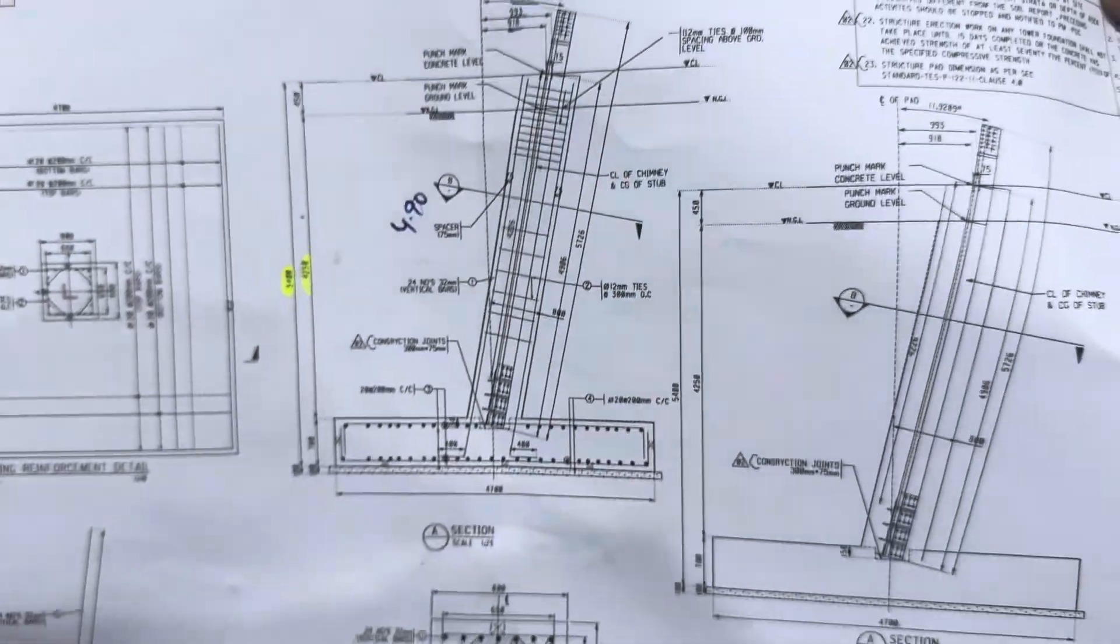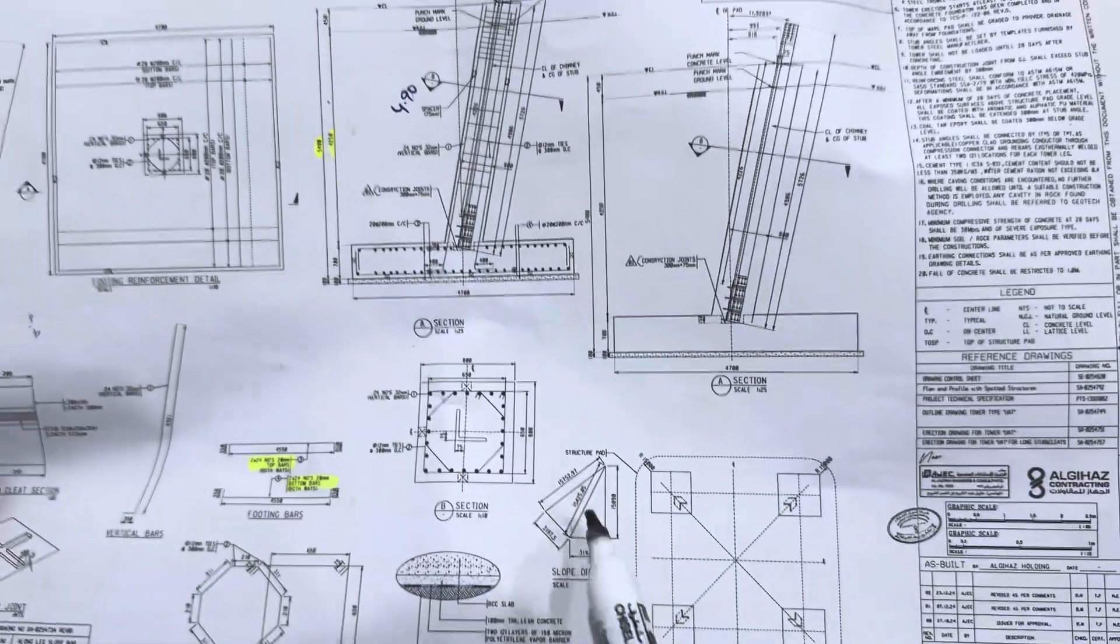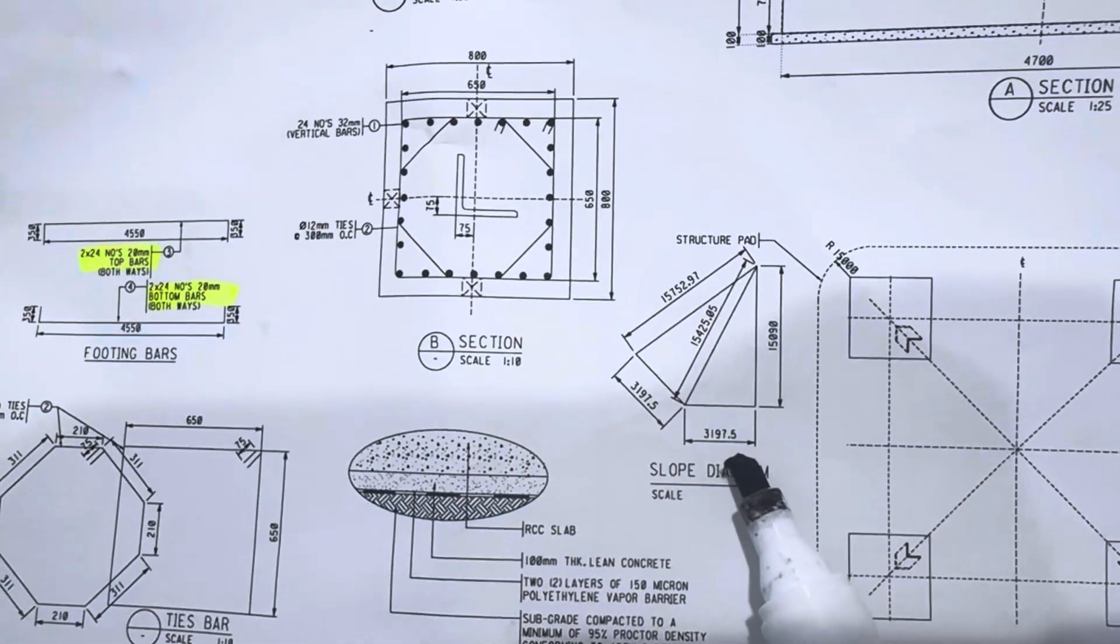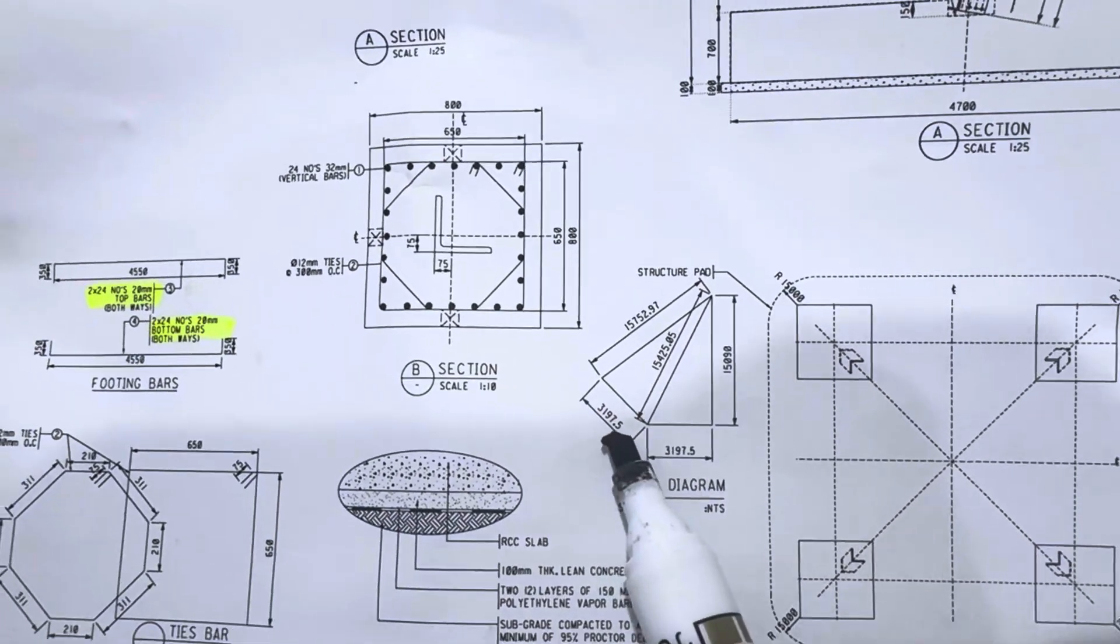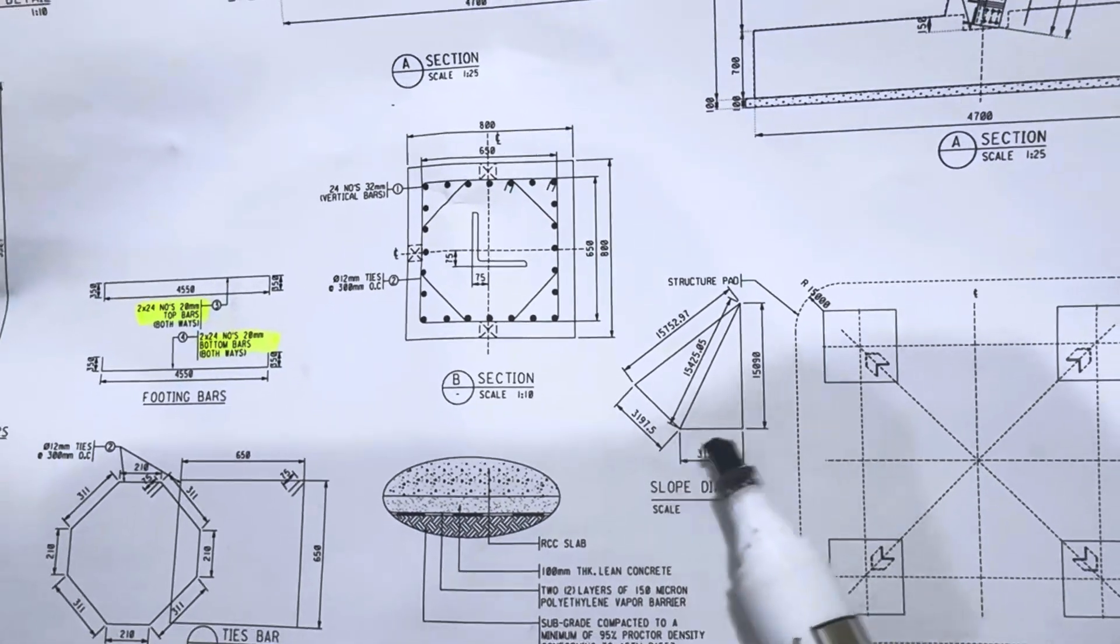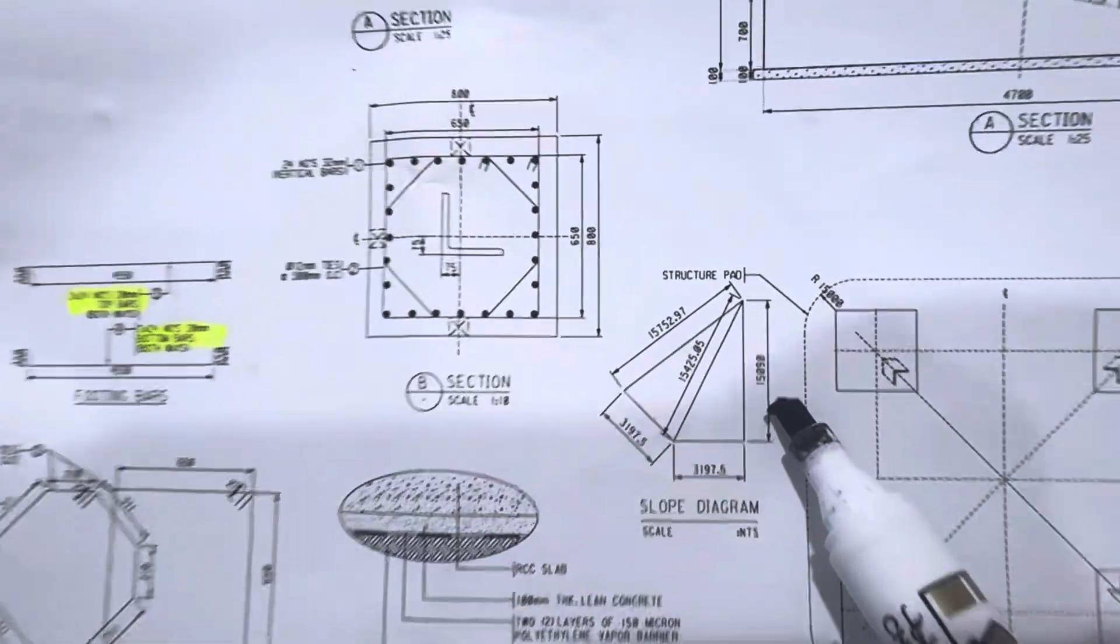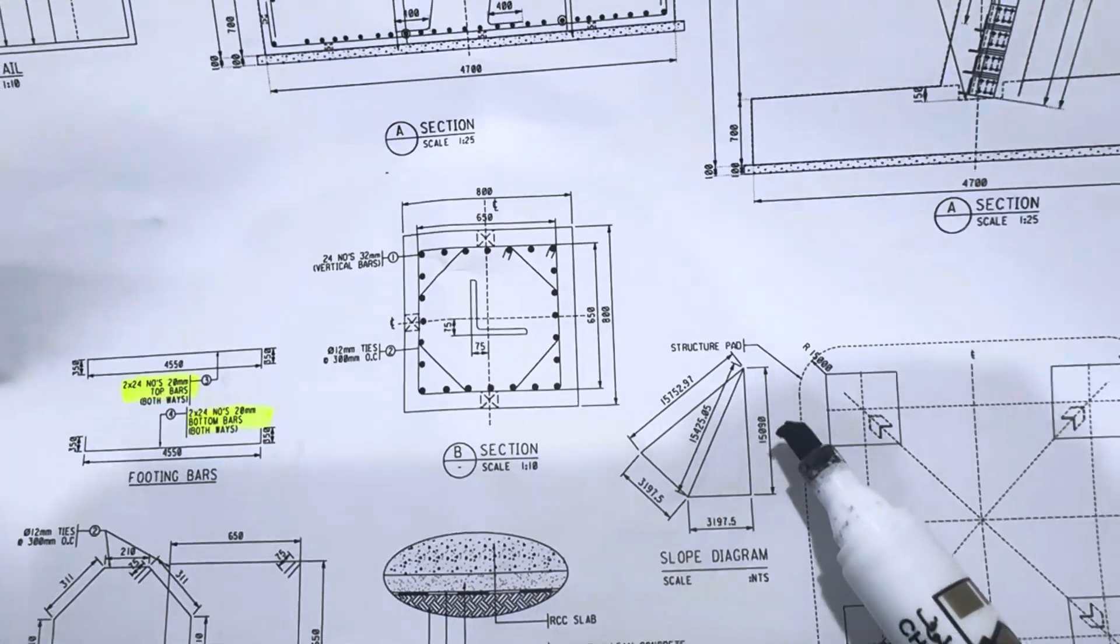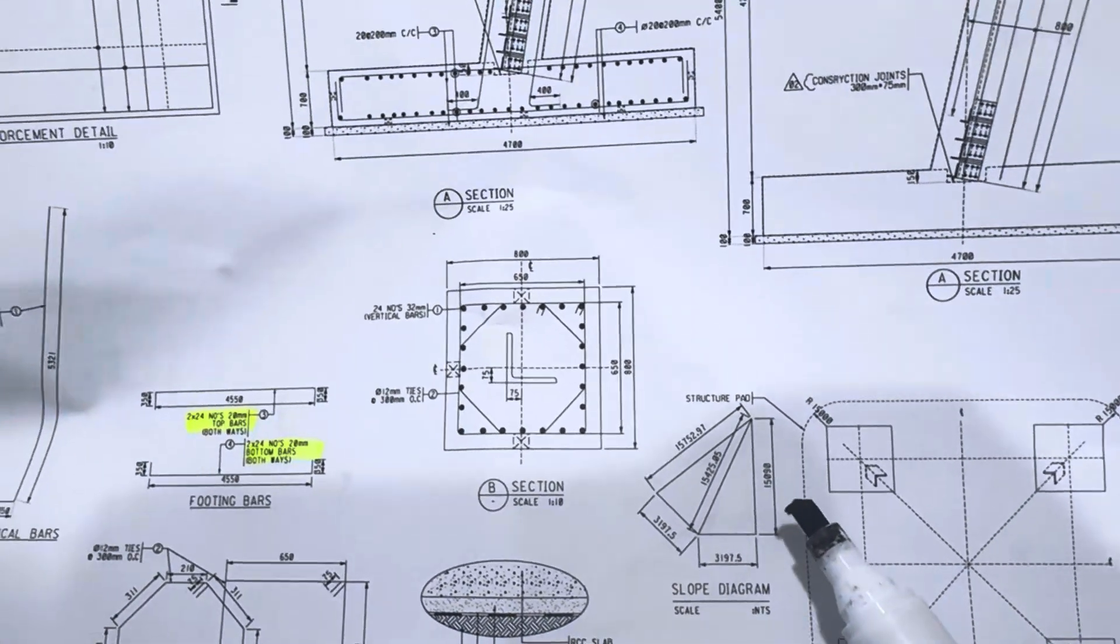So for taking out the slope of the step we have to look on this slope diagram. So here we have 3.1975, 31975 this is the base and the height is 1503090.